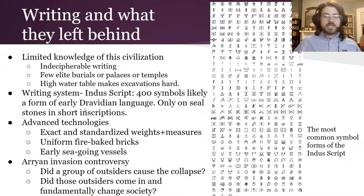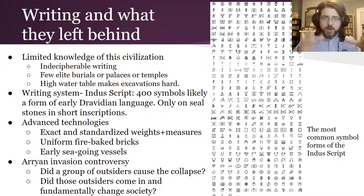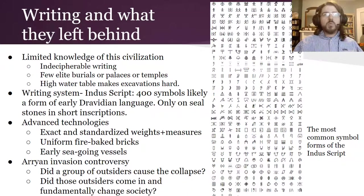Even so, they left behind impressive advanced technologies. They had exact standardized weights and measures, so traders in different towns agreed on what a unit of measure meant. They had fire-baked bricks of very uniform size, making construction precise and watertight — important given the flooding. They also had early seagoing vessels that enabled extensive trade with Mesopotamian city-states. However, because we lack early written evidence, there's been a lot of controversy about what exactly happened to this civilization, since it didn't last forever.